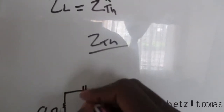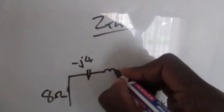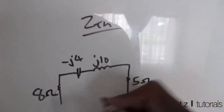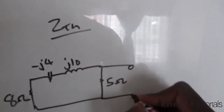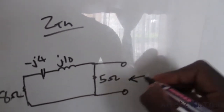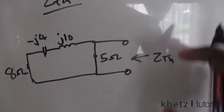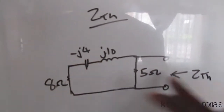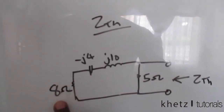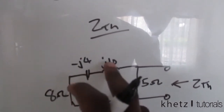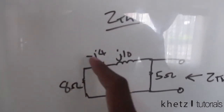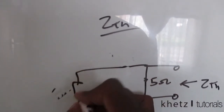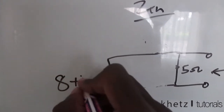Then you're going to have -j4, then j10, then 5 ohms. This is the point where we look for Zth where the load is — that is where we're looking from to find Zth. You can combine these three: 8, then 10 subtract 4 is just 6, so you can combine all three into a single impedance of value 8 + j6.